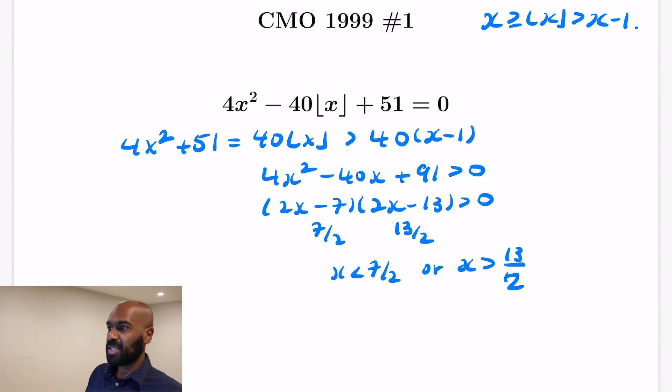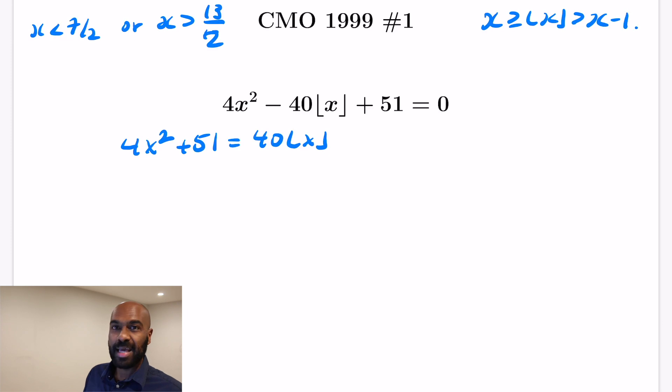So for x to satisfy that one inequality, we get these inequalities for x themselves. Now we have the upper bound that ⌊x⌋ ≤ x, so 4x² + 51 ≤ 40x. If we rearrange, that gives us the following quadratic inequality. We can factor this as well, given that 51 is 3 times 17.